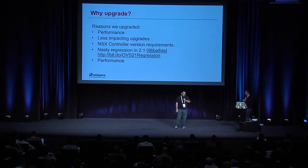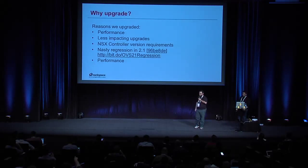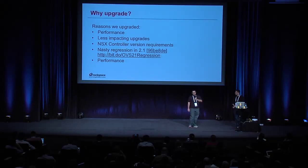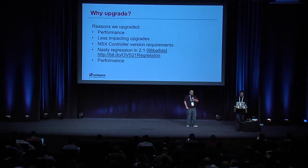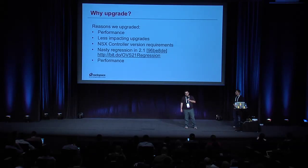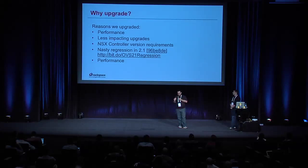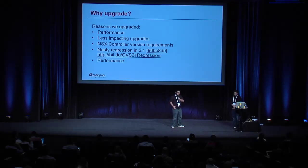Why upgrade OVS in the first place? The main reasons we've upgraded are around performance. We also did some upgrades to make upgrading itself less painful — they've made a lot of improvements to the in-place upgrade process. We also upgraded to support NSX controller upgrades. There was also a nasty regression in OVS 2.1 around certain VM types: after a tenant rebooted the instance, it would no longer get data path flows. But the main driving reason behind all of this is performance.